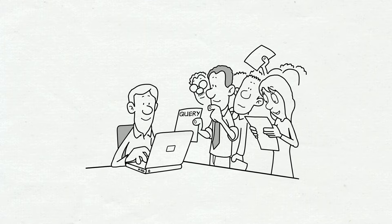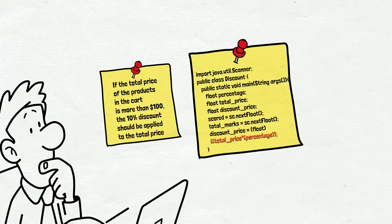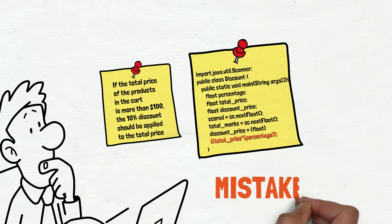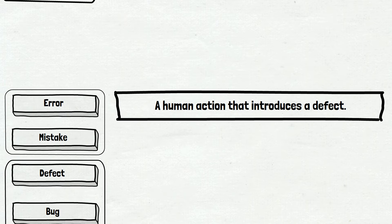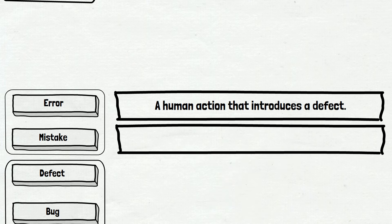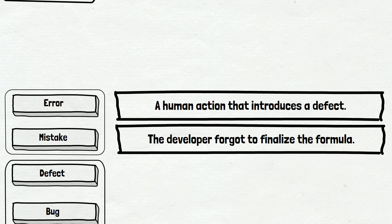When the developer returns to the code, he simply forgets what he was coding. So, he just leaves the code as it is. And it looks fine. In other words, the developer makes a mistake. So, let's go back to the definition now. Error. Mistake. A human action that introduces a defect. In our case, the developer forgot to finalize the formula. The defect is in the system. And it leads us to the next definition.